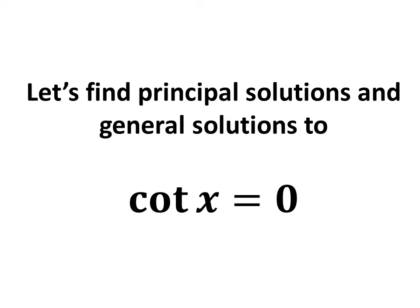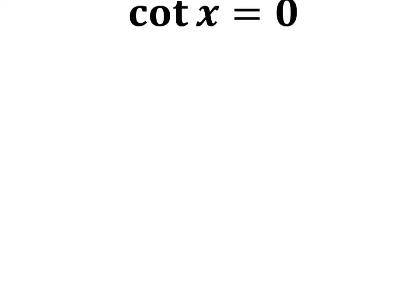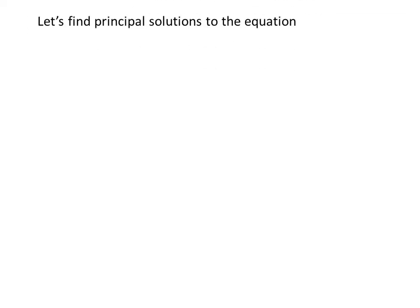In this video, we will learn to find the principal solutions and general solutions to the equation cotangent of x is equal to 0. Let's first find the principal solutions. We know the solutions to the trigonometric equation for which x is greater than or equal to 0 and less than 2 times pi are the principal solutions.